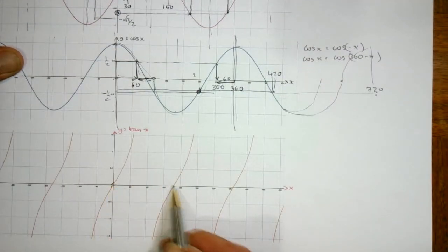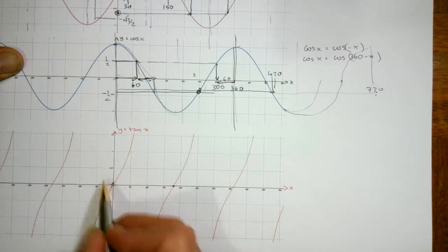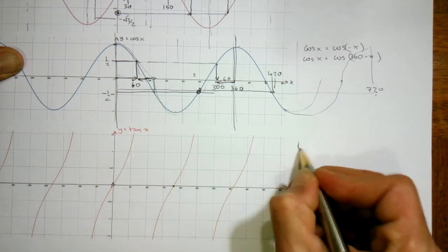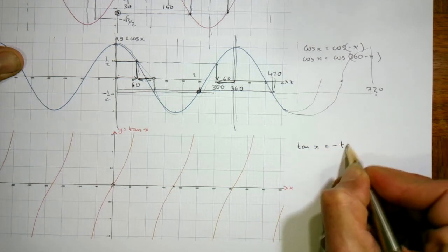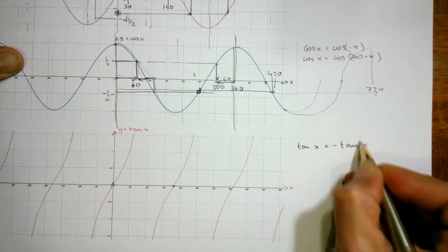Tan graph. We've got no line symmetry. The rotational symmetry here. So the tan we can write down, tan of x is the same as, like the sine graph, minus tan of minus x.